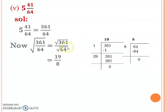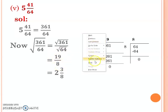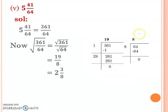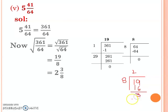Put 19 in place of 361 and 8 in place of the square root of 64. Now the result is 19 over 8. Since this is an improper fraction — numerator is greater than denominator — you can divide. Place 19 inside as dividend and divide by 8: 8 × 2 = 16, subtract to get remainder 3. Write it as a mixed fraction with quotient on the side.